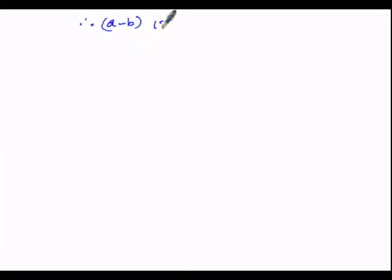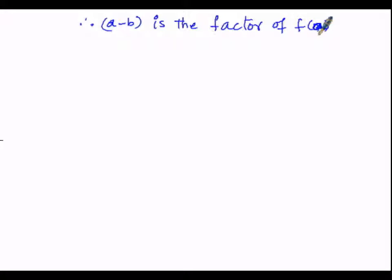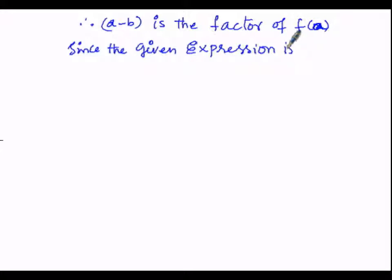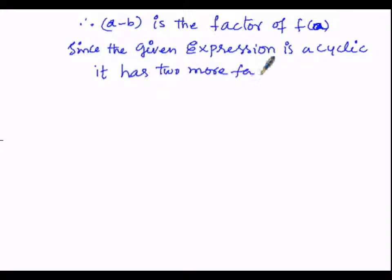Therefore a minus b is a factor of the cyclic expression F of a. Since the given expression is a cyclic one, it has two more factors: b minus c and c minus a.